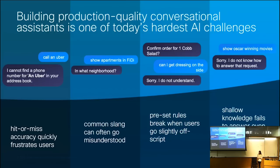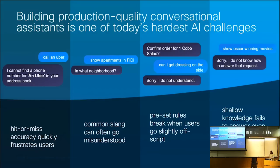Some of today's chatbots can be fairly disappointing. You can say something like 'call me an Uber,' and the response will be something like 'Sorry, I don't have a contact for an Uber in my address book.' Oftentimes, these voice assistants can misunderstand common slang or seem to break when you go even slightly off script. In addition, even basic requests that should be handled by the assistant get the response: 'Sorry, I don't know how to help with that.'